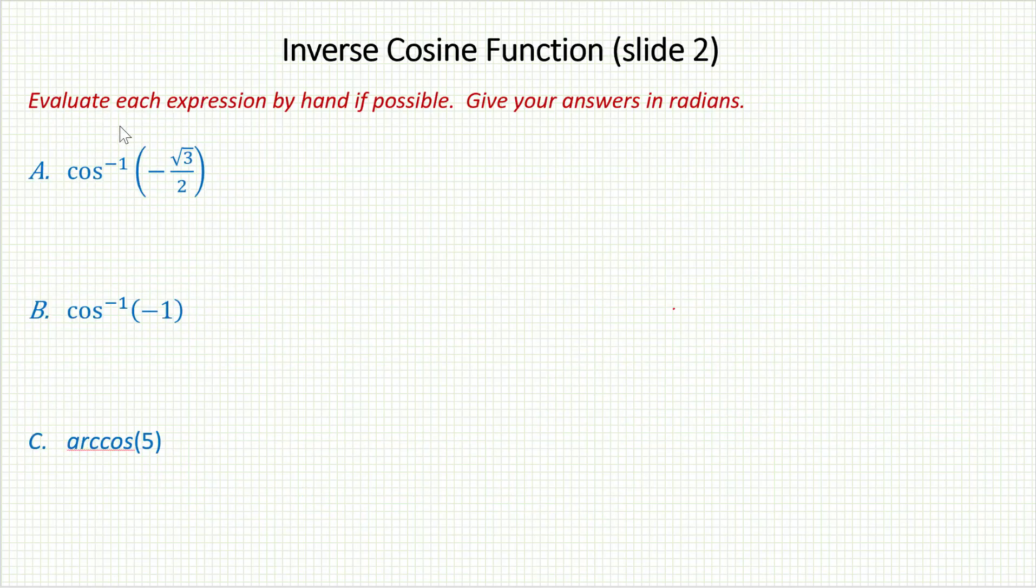Let's try some examples. Again, I want to do this by hand if at all possible. We're giving our answers in radians. Inverse cosine of negative √3 over 2. The negative √3 over 2 is a ratio being put in the inverse cosine function. I'm looking for the angle that creates that ratio. Of course, I can't just find any angle I want because the inverse cosine function only knows about angles between 0 and π.